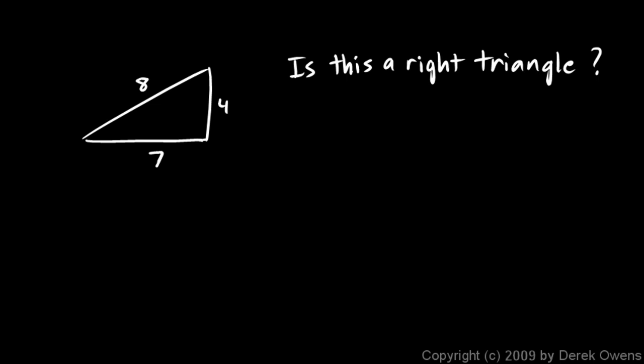Is this a right triangle? Well, the way to answer that is to say, 4 squared plus 7 squared, is that equal to 8 squared? And this is easy to do. 4 squared is 16. 7 squared is 49. So we say, is that equal to 8 squared? Well, 8 squared is 64. So what's 16 plus 49? 16 plus 49 comes out to be 65, and that's not equal to 64. So this is not a right triangle.